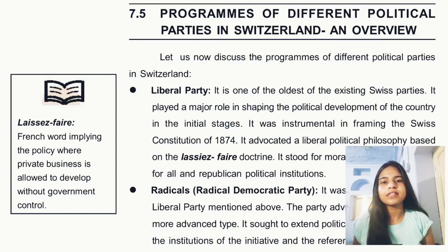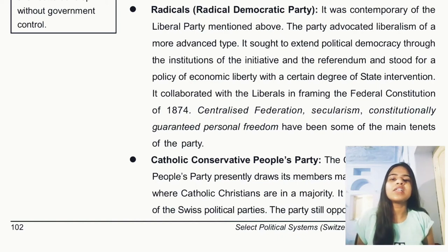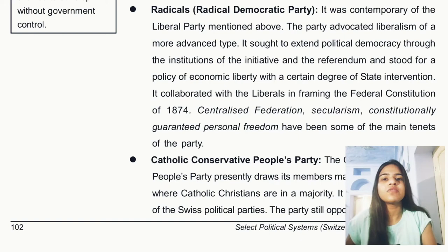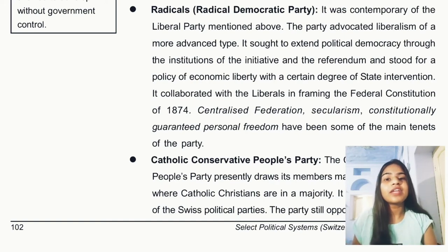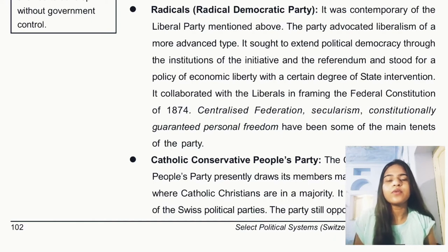The next party is the Radical Democratic Party, which believed in an advanced form of liberalism and stood for economic liberty. Unlike the Liberals, who said there should be no government intervention, the Radical Democratic Party said there should be a little bit of state intervention. They also actively contributed to the framing of the constitution of 1874.